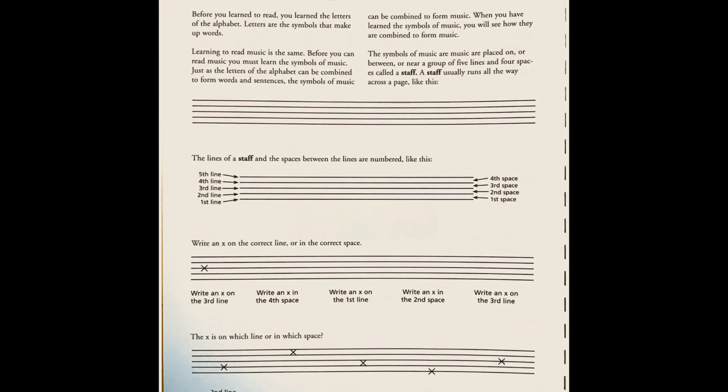Just as the letters of the alphabet can be combined to form words and sentences, the symbols of music can be combined to form music. When you've learned the symbols of music, you will see how they are combined to form music. And the symbols of music are placed on or between or near a group of five lines and four spaces called a staff. A staff usually runs all the way across a page like this.